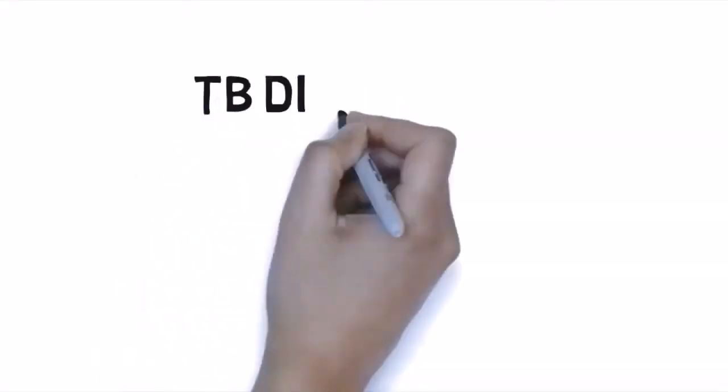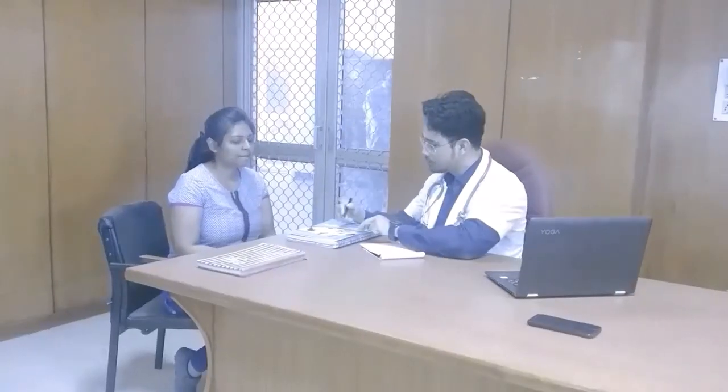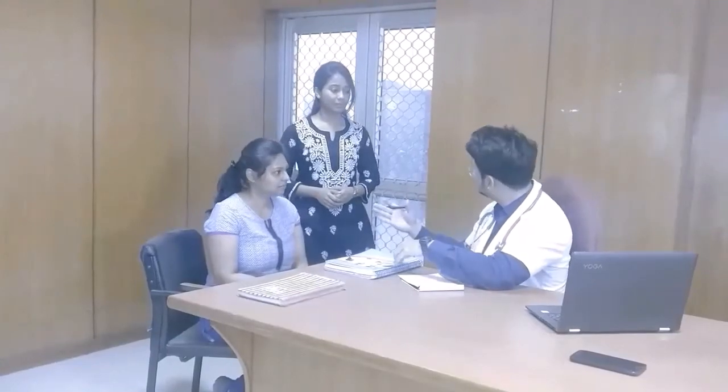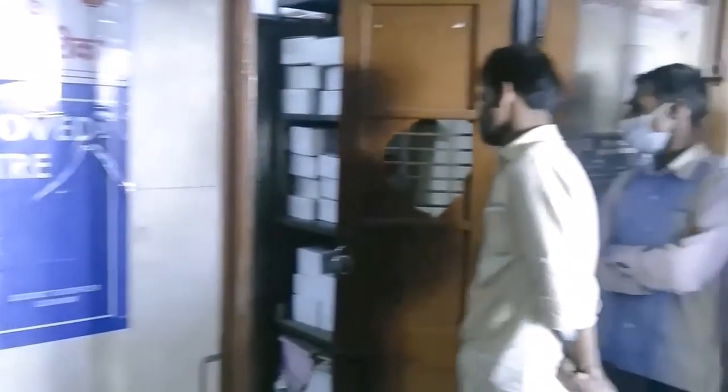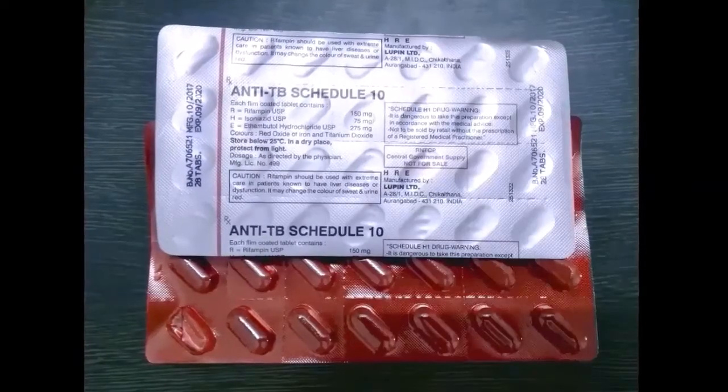When diagnosed with TB, all patients are thoroughly counseled before initiating treatment. Close family members are also involved during the process. The patients are then put on short-course chemotherapy provided to them for free. During the intensive phase of chemotherapy, all drugs are administered under direct supervision, called directly observed treatment short-course (DOTS), given by peripheral health staff or through voluntary workers.